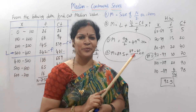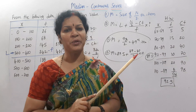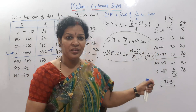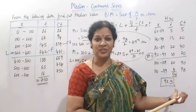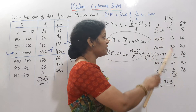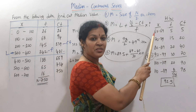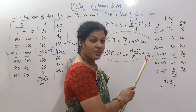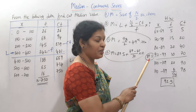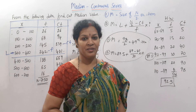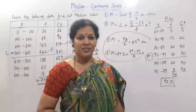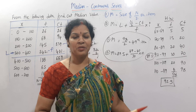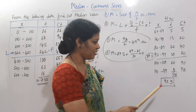Let me know in the comments how many of you are getting the same answer. To summarize: when class intervals are given as 60–69, 70–79 etc., the only difference is that L must be taken as 89.5 instead of 89. The rest of the problem is exactly the same as normal.